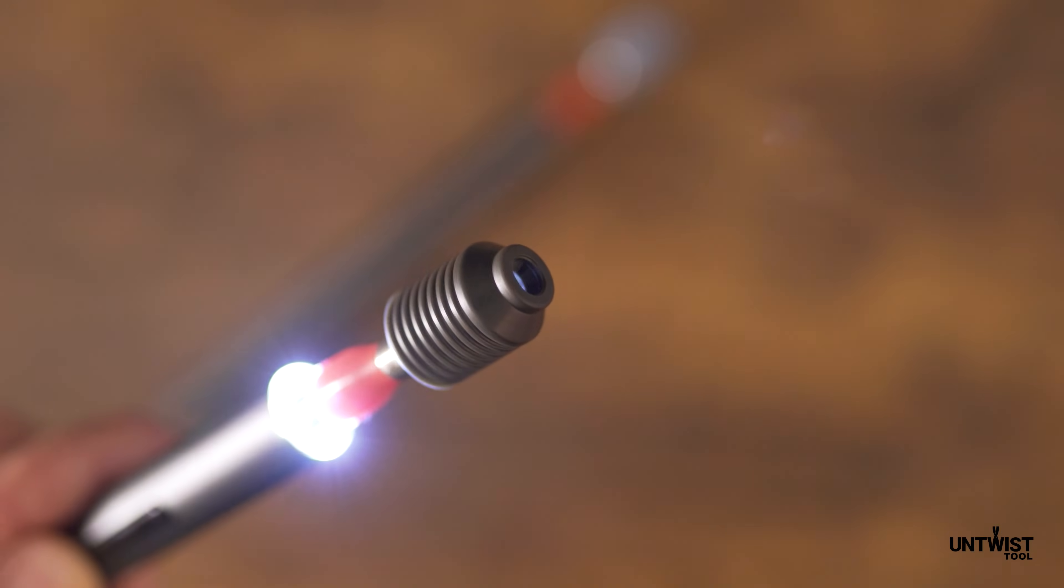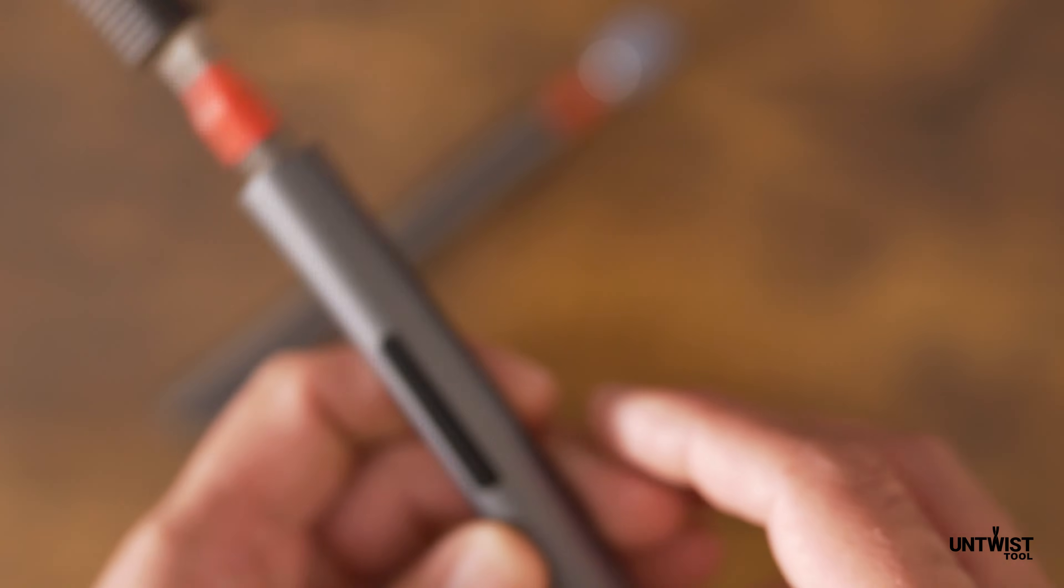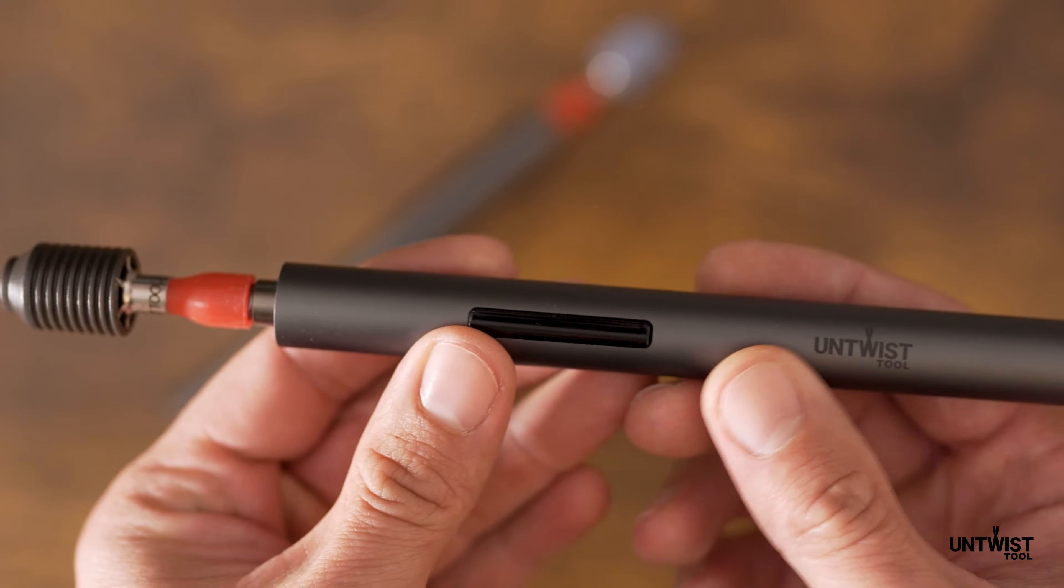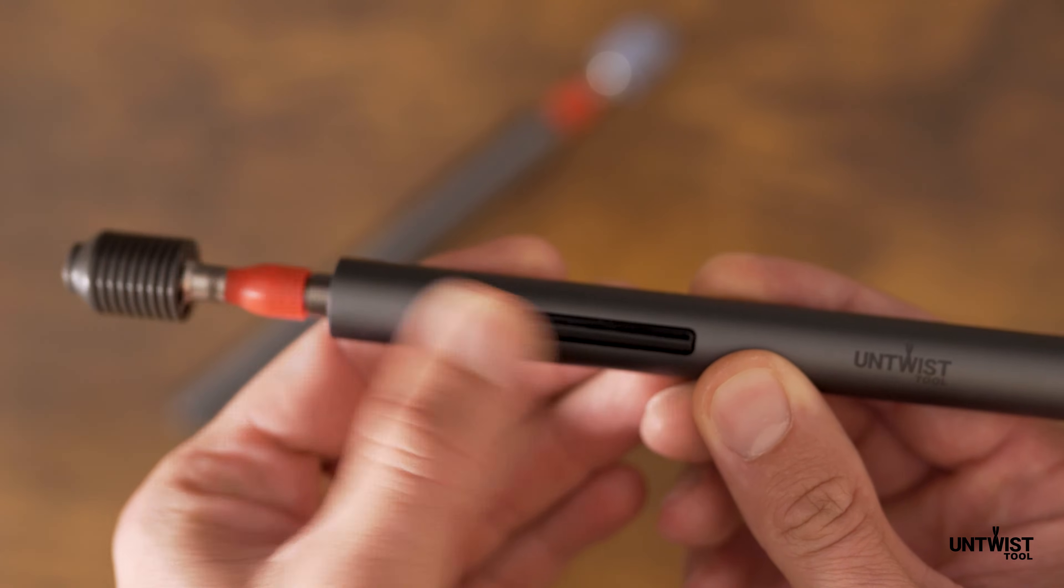The tool uses centrifugal force and slight pressure to untwist and separate twisted pairs. The button has two directions, clockwise and counterclockwise.